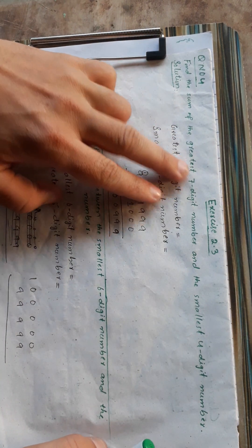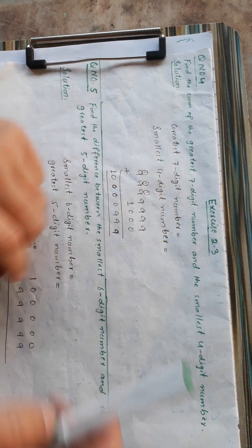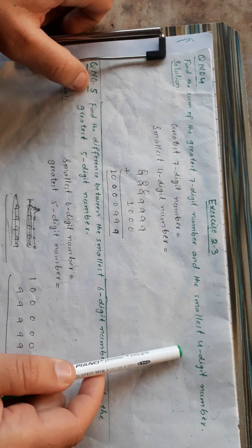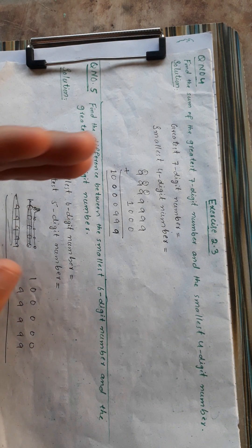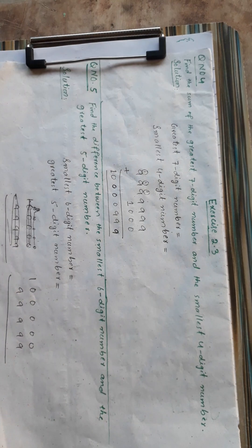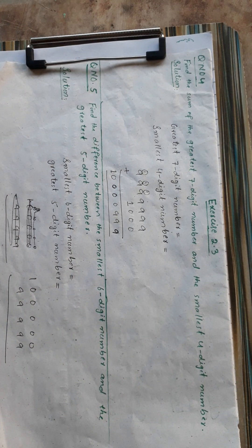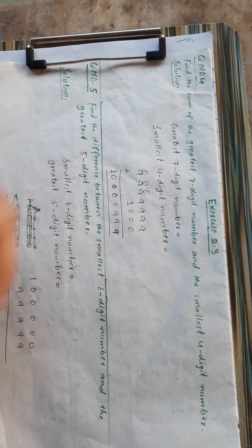Question number 4: Find the sum of the greatest 7-digit number and the smallest 4-digit number. We need to find the greatest 7-digit number and the smallest 4-digit number, then find their sum.